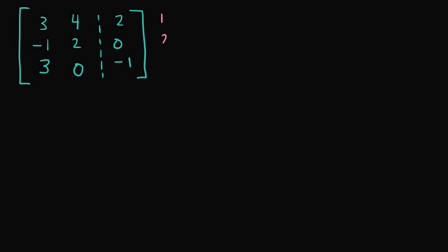we have 1, 2, 3 rows. This tells us that the number of rows equals the number of equations. So, we know that since this augmented matrix has 3 rows, we're going to need 3 equations.